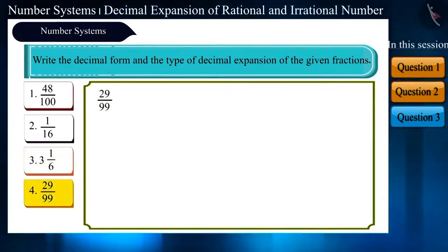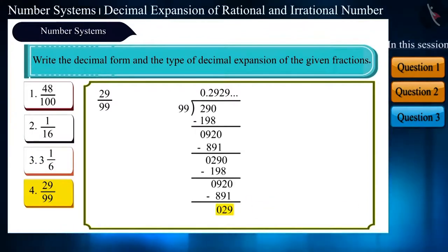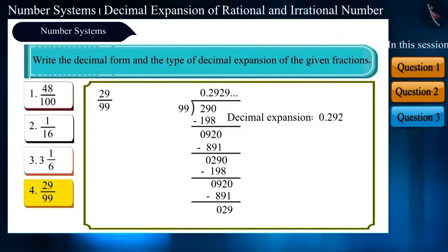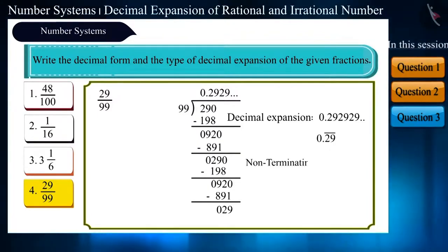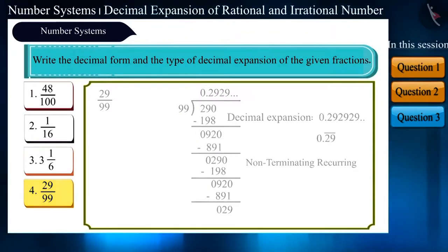Friends, let us look at the next fraction 29 by 99. If we solve this, we realize that the remainder is not 0. In the quotient, 2 and 9 keep repeating themselves. And the decimal expansion is 0.292929. We can also write this as 0.29 bar. Friends, upon looking at it, you can easily say that this expansion is also non-terminating, recurring.